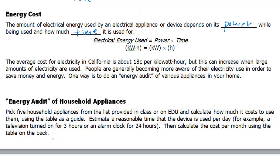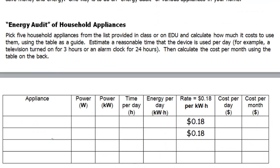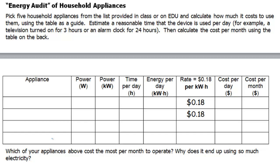Energy audit of household appliances: pick five household appliances from the list provided in class or on EDU — I'll give you a link for that — and calculate how much it costs to use them using the table on the back as a guide. Estimate a reasonable time that the device is used per day. For example, a television turned on for three hours or an alarm clock for 24 hours. Then calculate the cost per month using the table on the back.